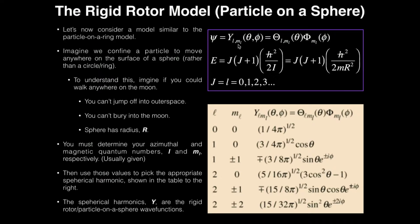So the Y that you use depends on what your azimuthal quantum number is and what your magnetic quantum number is.